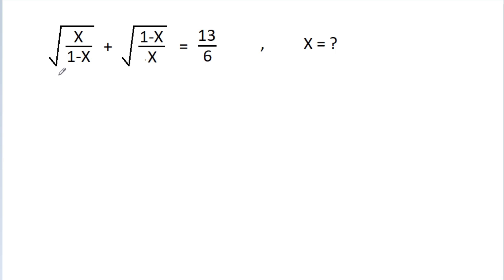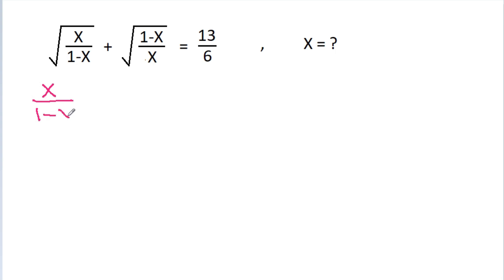In this video, we have given that the square root of x over (1 minus x) plus the square root of (1 minus x) over x is equal to 13 by 6. We have to find the value of x. Suppose x over (1 minus x) is equal to y.